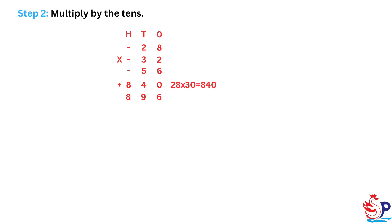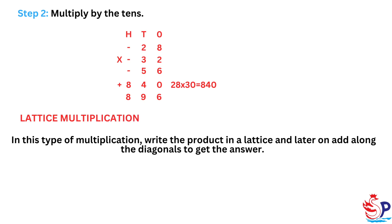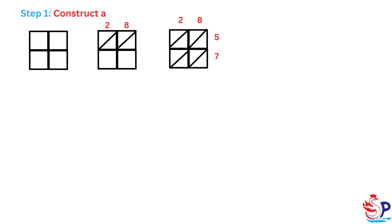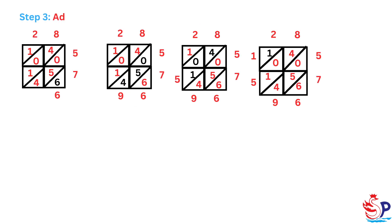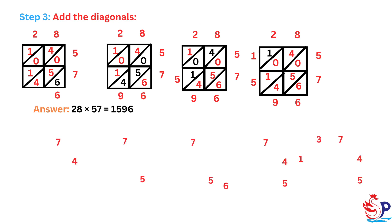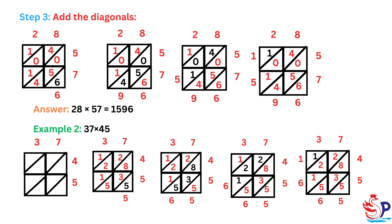28 times 30 equals 840. Lattice multiplication: in this type of multiplication, write the product in a lattice and later add along the diagonals to get the answer. Example 1: 28 times 57 — Step 1: construct a lattice; Step 2: fill in the products; Step 3: add the diagonals. Answer: 28 times 57 equals 1596. Example 2: 37 times 45. Answer: 37 times 45 equals 1665.